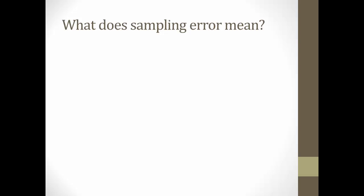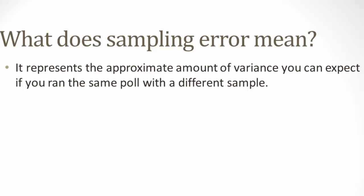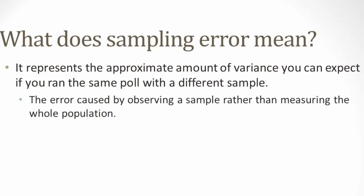Anytime you take a sample from a larger group and generalize the results to the larger population, you will end up with sampling error. Sampling error represents the approximate amount of variance you can expect if you ran the same poll with a different sample. It is the error that is caused by observing a sample rather than measuring the whole population.